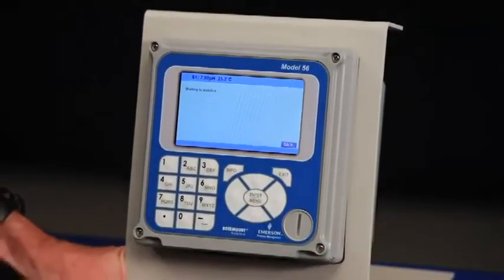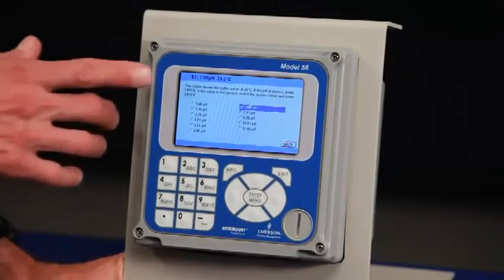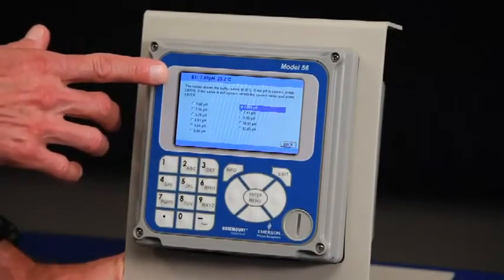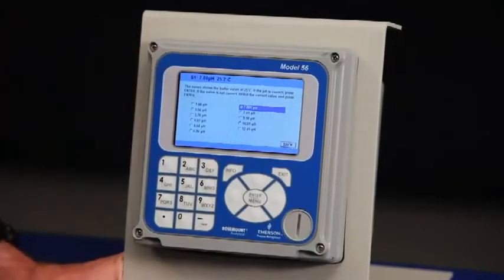Proceeding through the calibration by pressing enter will display the buffer values for buffer 1. And it's very important that the technician can see the live input value at the top of the screen to make sure that it's stable before calibrating.